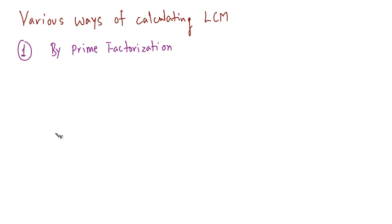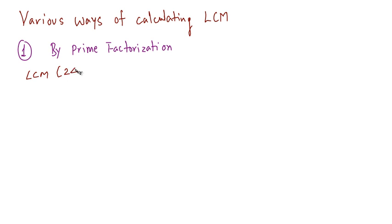In any exam, you need faster ways of calculating LCM. So out of those many ways, there is one prime factorization method of calculating LCM. Let's do this with an example — let's calculate the LCM of 24 and 60. In this method, first you have to calculate the prime factors of the given numbers.